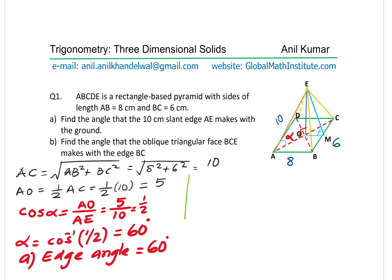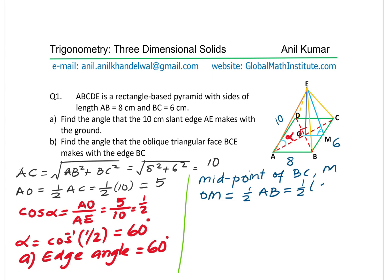For part B, we need the angle that oblique triangular face BCE makes with edge BC. We find the midpoint M of BC, then join M to the center O. OM equals half of AB, and AB is 8, so OM equals 4. We know one side is 4, but we still need the height of the pyramid.